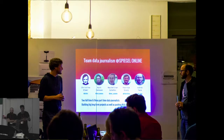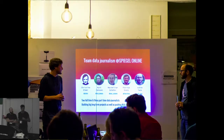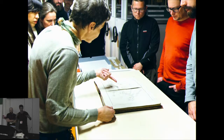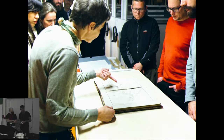We also invited guests — for example from Spiegel Online, a big German newspaper — who talked about data journalism, because in Germany digital maps and data journalism are very intertwined. We also managed to take a group of Maptimers in Berlin to the secret map vault in the library, where they invited us to see some old maps that you usually won't get access to. We were lucky because we're Maptime Berlin.